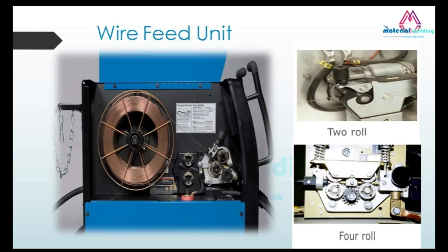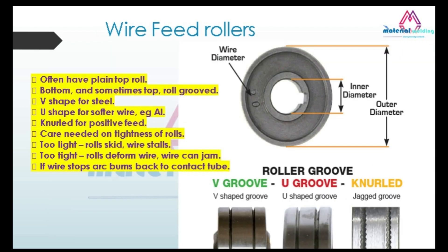Inside the wire feeder, the wire pushing mechanism includes rollers which are either two-roll or four-roll type. The rollers often have a plain top roll, and a bottom (and sometimes top) roll groove — V-shaped for steel and U-shaped for softer wire such as aluminum. They are knurled for positive feed. Care is needed on roller tightness: if too loose, rolls skid and wire stalls; if too tight, rolls deform the wire and it can jam. If wire stops, it burns back to the contact tube.